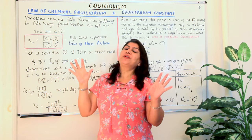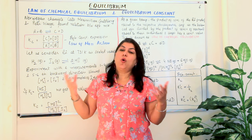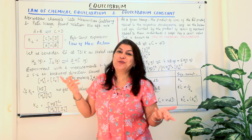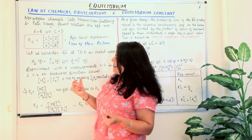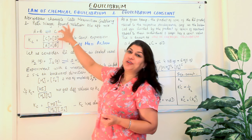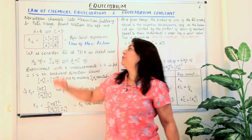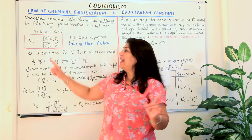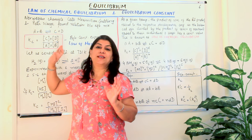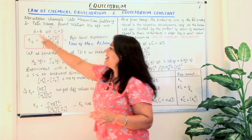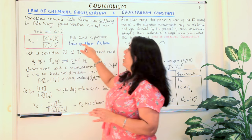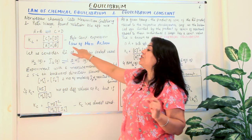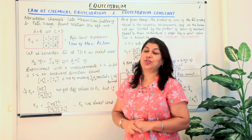When we say that the concentrations become constant, obviously when you have two constant numbers their ratio should also be constant. So at equilibrium, the product of the concentrations of the products divided by the product of the concentrations of the reactants is constant — and that is known as the equilibrium constant. This entire expression is also known as the law of mass action.